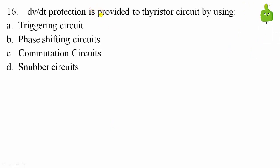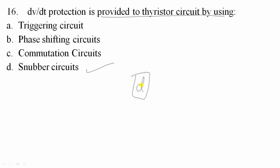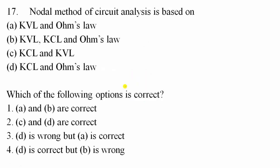Question 16: dv/dt protection is provided to the thyristor circuit by using a snubber circuit. There are three types of protection: snubber circuit protection, di/dt protection, and dv/dt protection. Option D is correct. Question 17: Nodal method of circuit analysis is based on Kirchhoff's Current Law and Ohm's Law. Option 4 is correct.